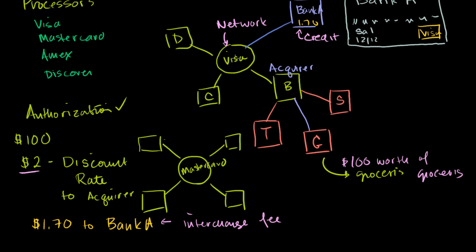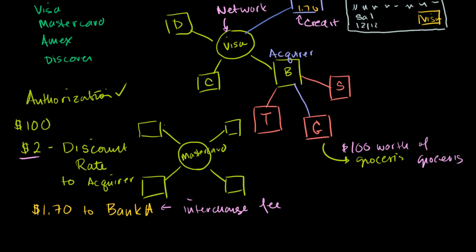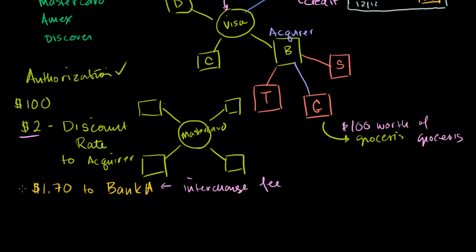And then the network, they make their money in several ways, but in general they make money off of every transaction as well. So in this situation, they make roughly about 0.1% of the transaction. So in this example, $0.10 of this discount rate that this guy charged would go to the processor, or the network. So every time you transact, the processor gets a small fraction of your actual purchase. And then this guy will be left with $1.70, $0.10, $1.80. We're coming from $2. This guy's going to be left with $0.20.